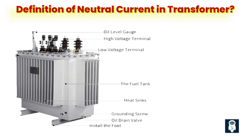A neutral current transformer is a type of current transformer used to measure the current in the neutral conductor of a three-phase electrical system. In a three-phase system, the current flowing in each phase is not always equal, which can cause a difference in potential between the neutral and ground. A neutral current transformer can help detect this imbalance by measuring the current flowing in the neutral conductor, and is commonly used in power distribution systems to monitor balance and detect faults or abnormalities.